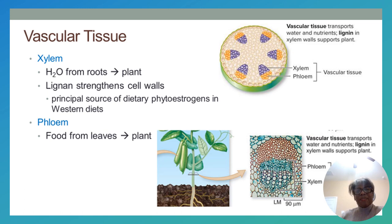The xylem is responsible for the transport of water from the roots throughout the plant, whereas the phloem is responsible for the transport of food — nutrients and minerals — from the leaves throughout the plant. Remember: xylem transports water, phloem transports food.